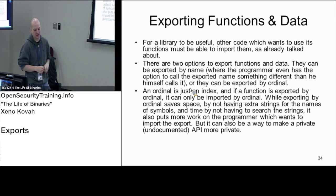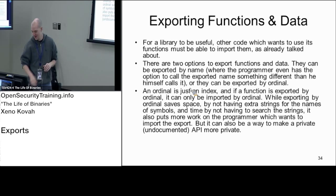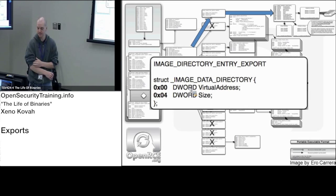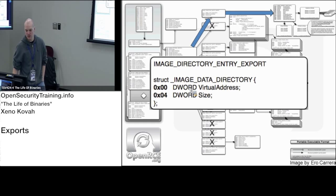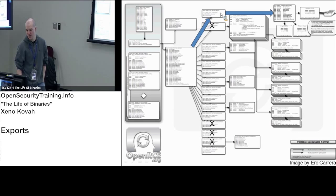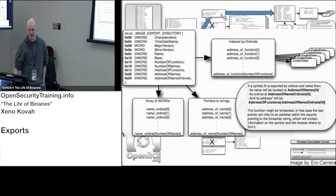So that's a high level — you can just think of it as names and RVAs. The reality is the data structure will be a little more complicated. How do we get to the export address table? We do that through the data directory as normal, and the zeroth entry in the data directory is the pointer to the export address table.